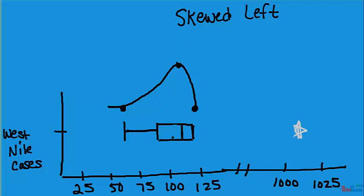It looks like the shape is skewed left. Remember, if the tail drops off to the left, it's skewed to the left. But there's one outlier. So we'll say skewed left with an outlier.